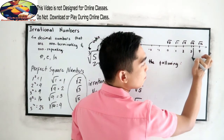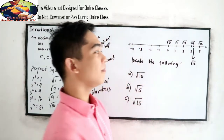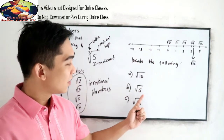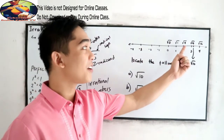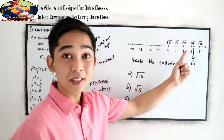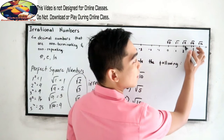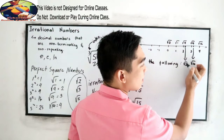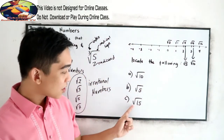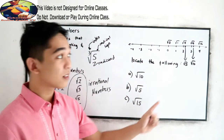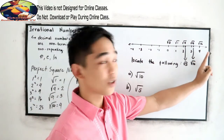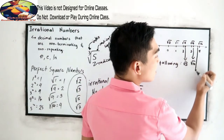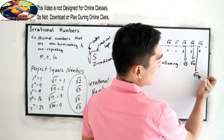For square root of 10: since square root of 10 is greater than square root of 9, it is located to the right of 3 on the number line. For square root of 5: it is greater than square root of 4, so it is to the right of 2. For square root of 15: since 15 comes before 16, it is to the left of 4 on the number line.